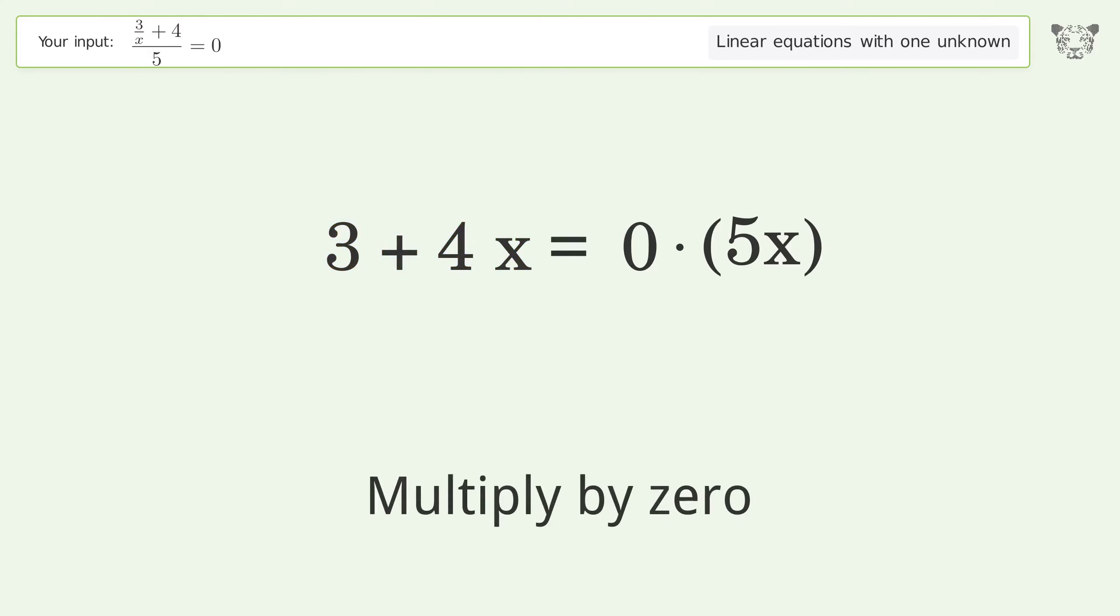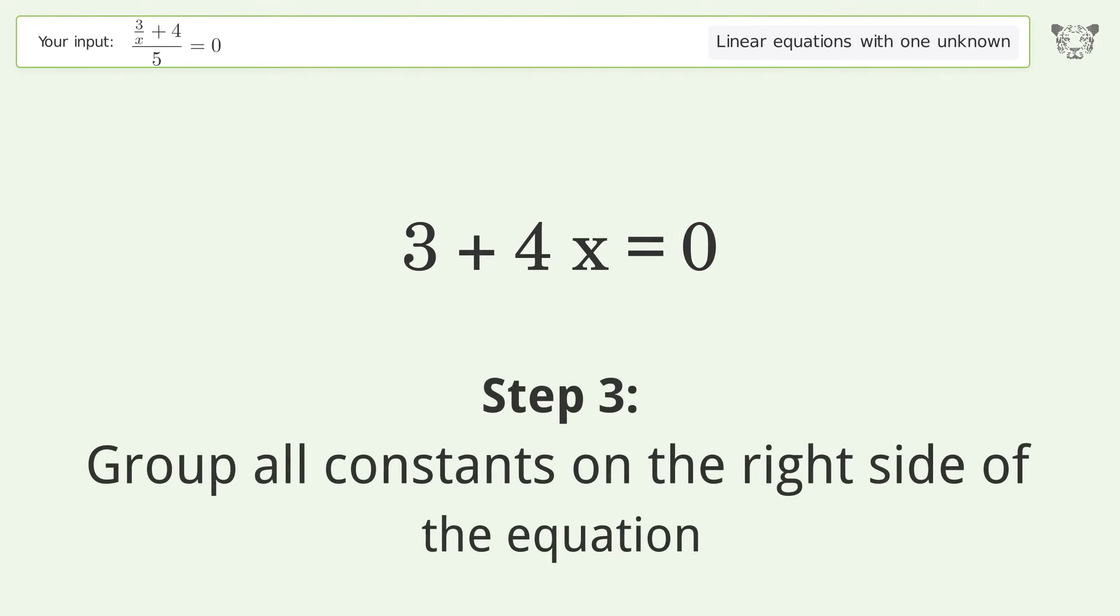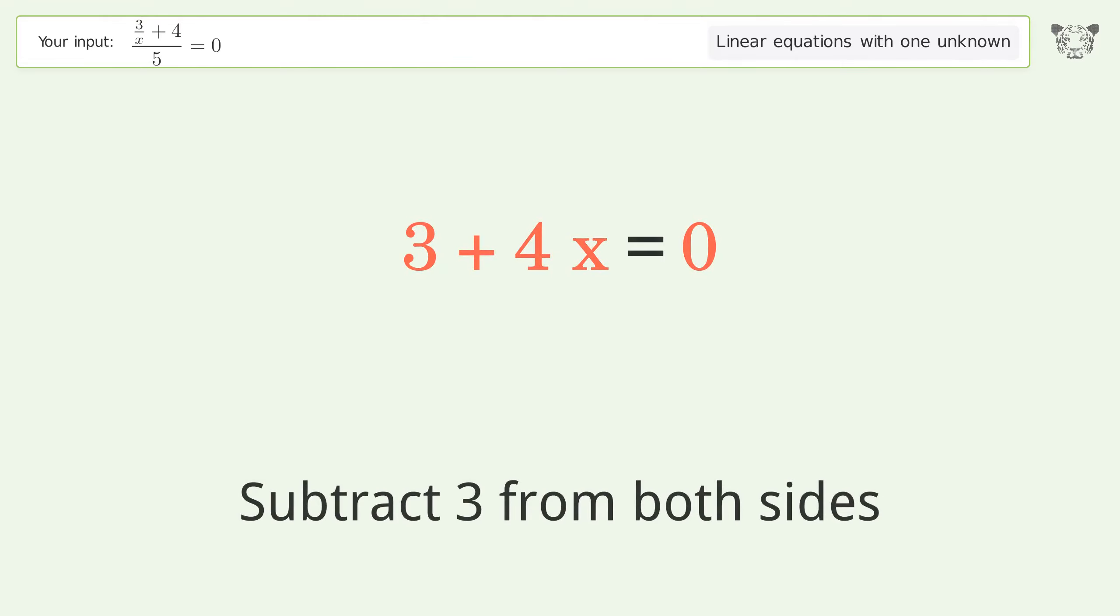Multiply by zero. Group all constants on the right side of the equation. Subtract 3 from both sides.